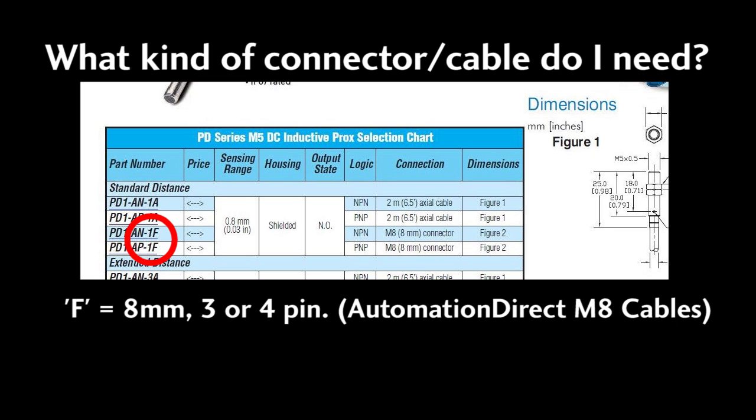An F suffix is the 8 mm connector which may be 3 or 4 pins. Make sure you select the correct one. These 3 pin connectors are what Turck calls Picofast.